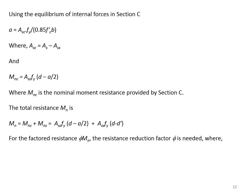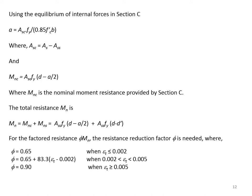For the factored resistance phi × M_n, the resistance reduction factor phi is needed. The smallest possible value for phi is 0.65 when epsilon_t is less than or equal to 0.002. The largest value for phi is 0.9 when epsilon_t is greater than or equal to 0.005. For values in between these two limits, phi is obtained from the intermediate equation. From the strain diagram, epsilon_t equals 0.003 times (d_t minus x) divided by x.